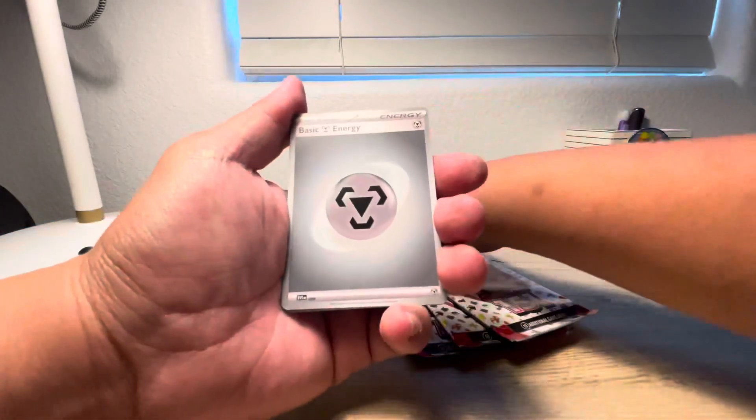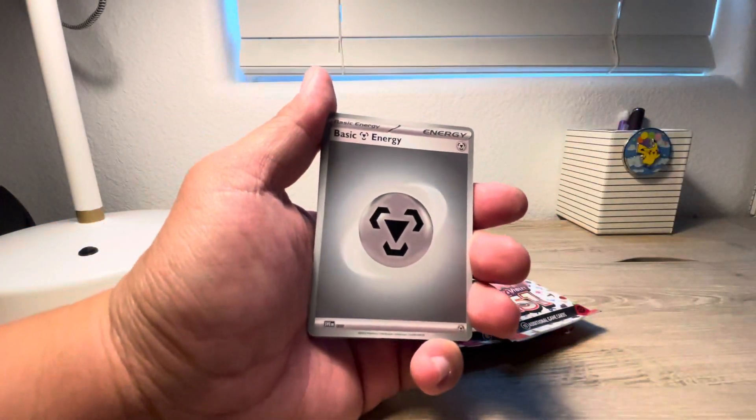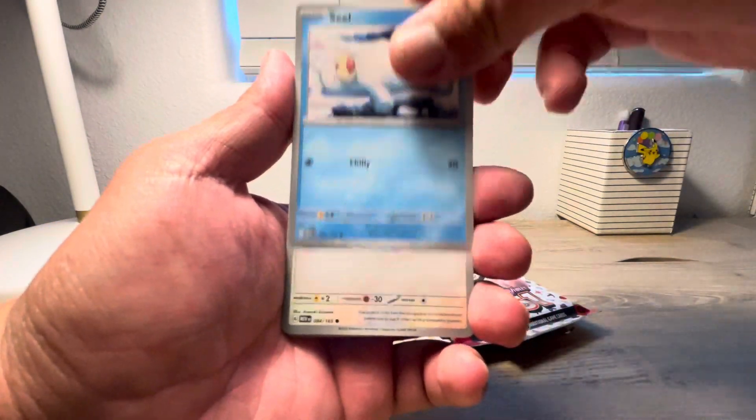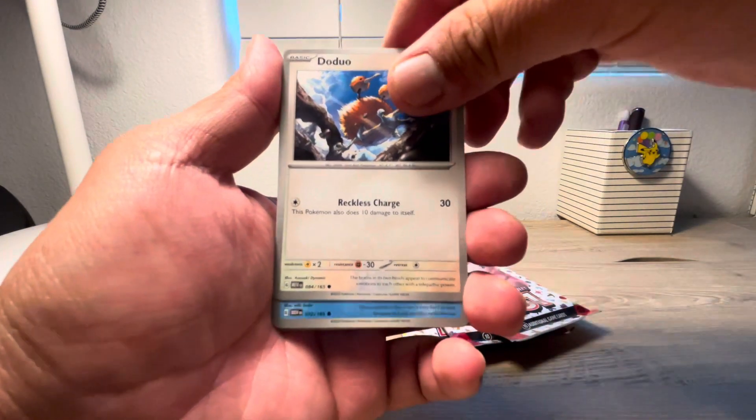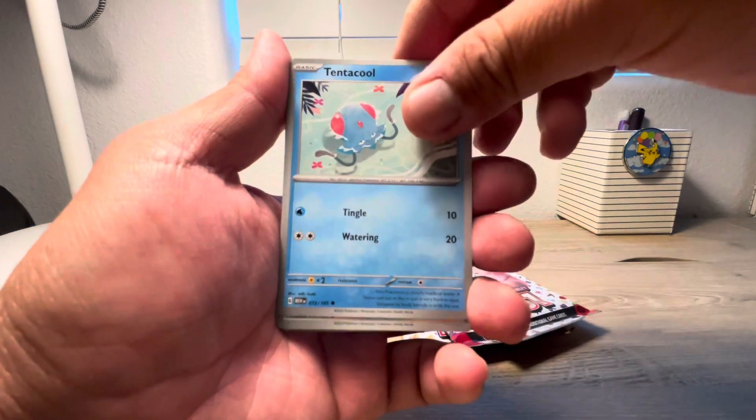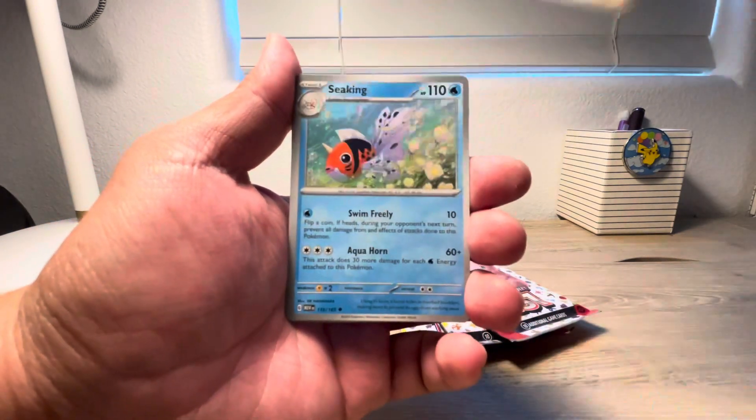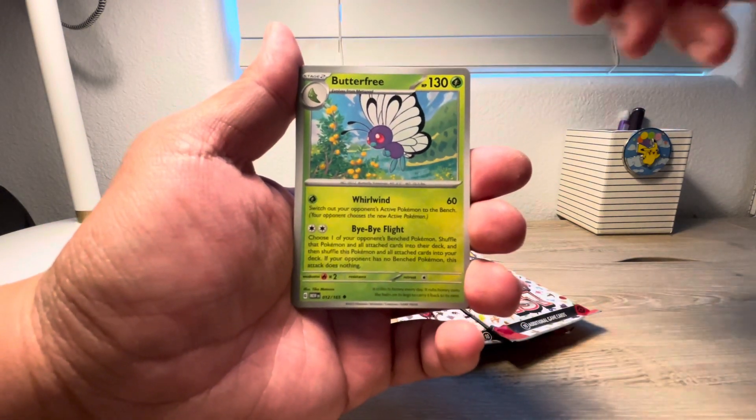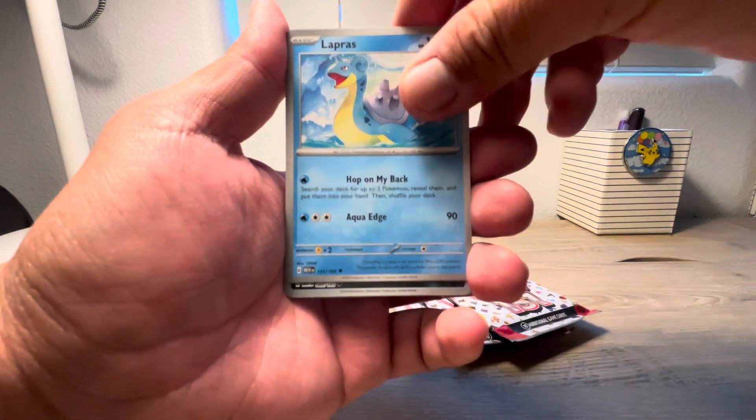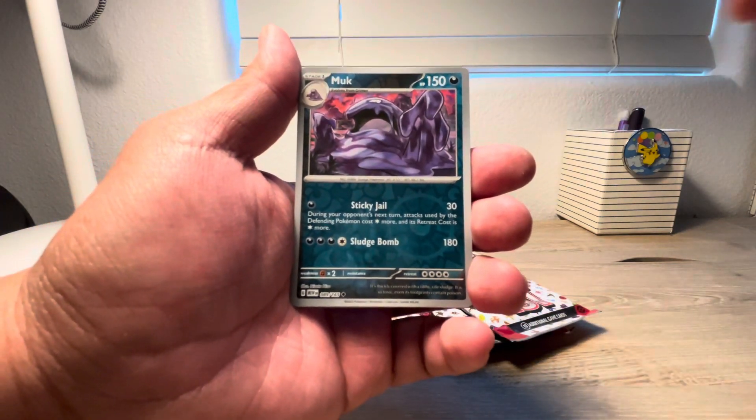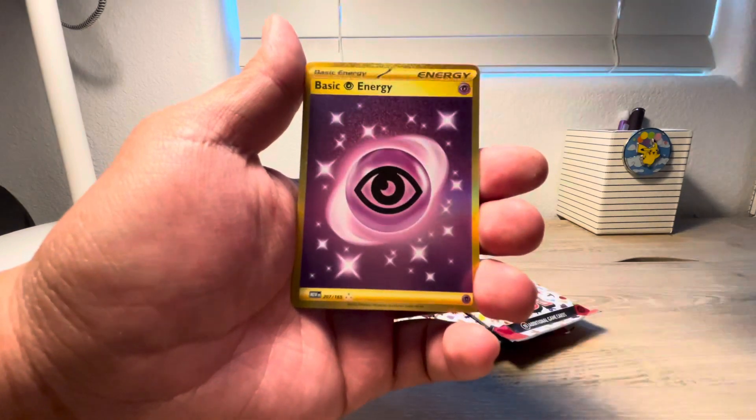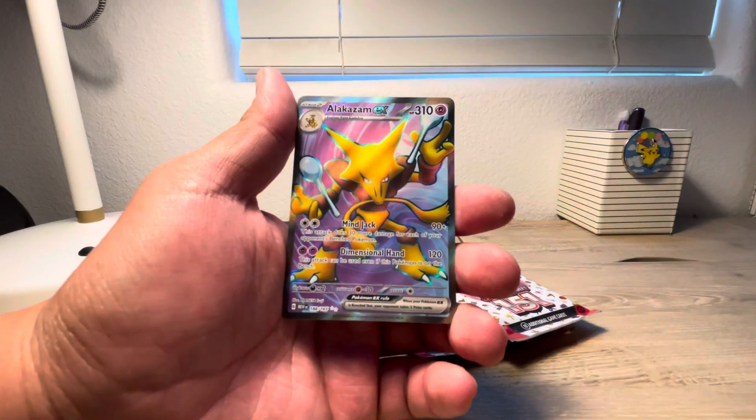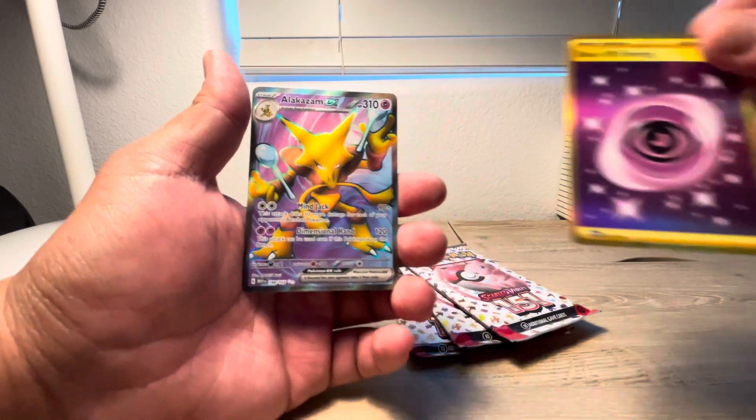Steel Energy, Steel Energy, a Seal, Doduo, Tentacool, Rattata, Seaking, oh a Butterfree, that's cute. Lapras, a Muk, and an Alakazam EX. Nice. And Alakazam EX, dang, got a double banger here. Woo!